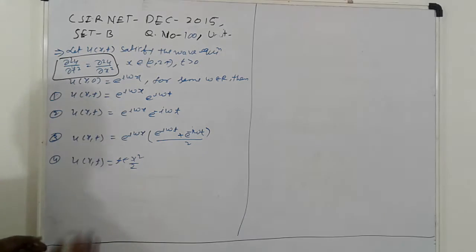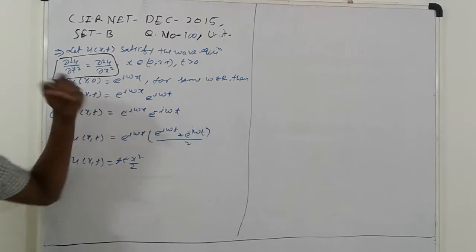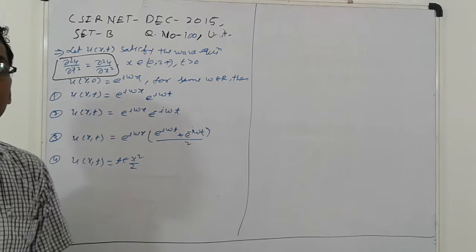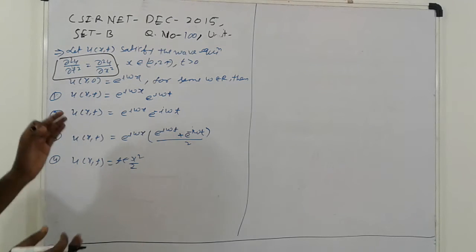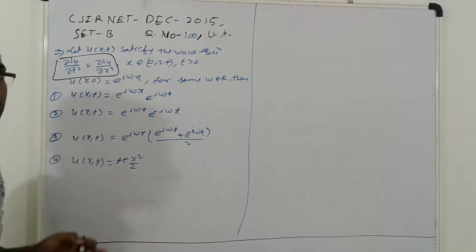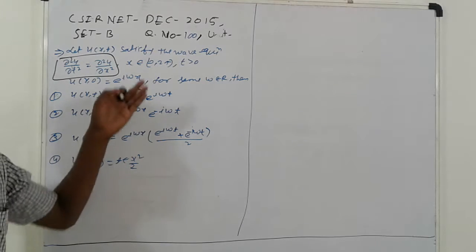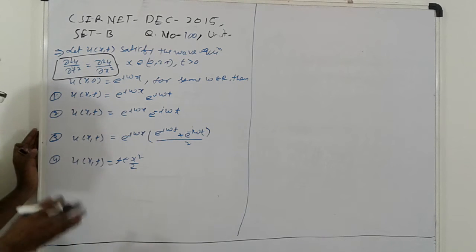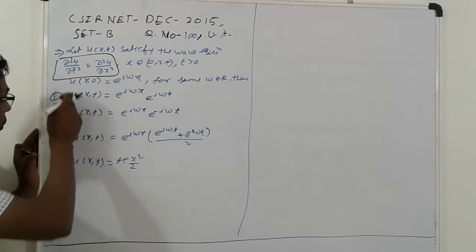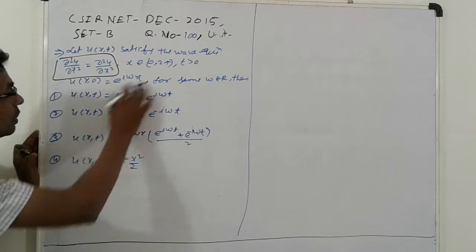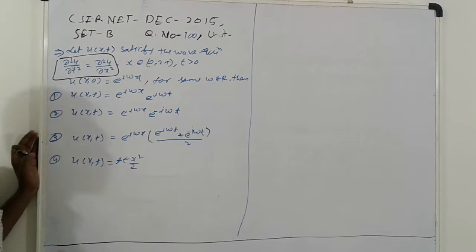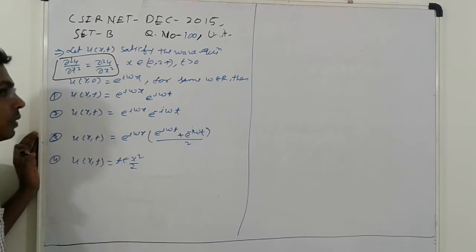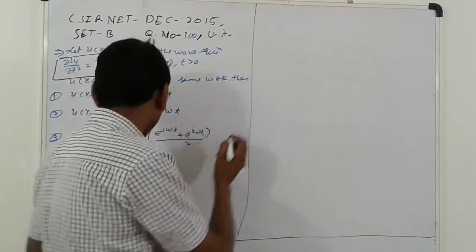If you go through these equations, it will be a very lengthy procedure. So what we do is go through these equations and prove them. The reason is that if u(x,t) is a solution, it means all these values satisfy the given wave equation. So first, let's go to the first option.